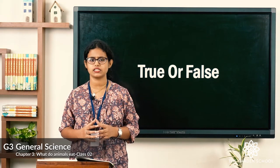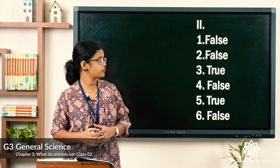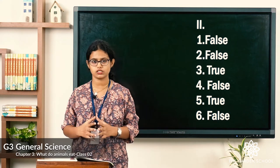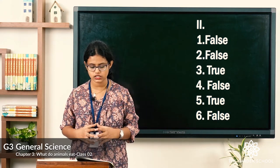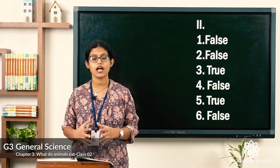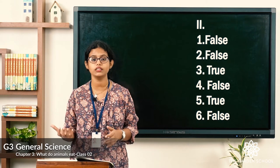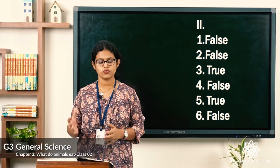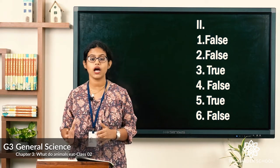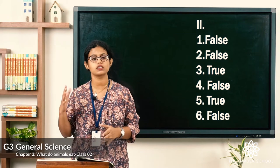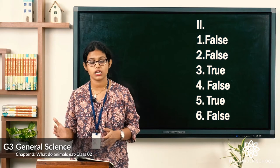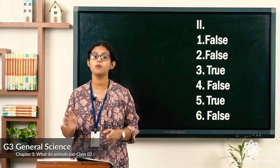Now let's see the answers. First: some birds such as sparrows eat only plants — the answer is false. Sparrows eat both plants and animals, so we call them omnivores. Second: no animal eats both plants and animals — false, because there are animals which eat both plants and animals, called omnivores.